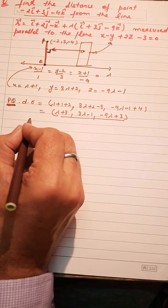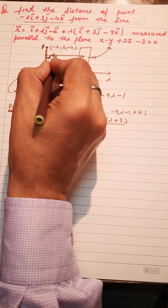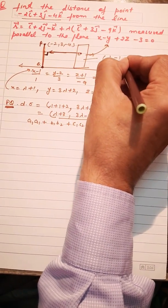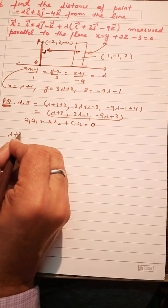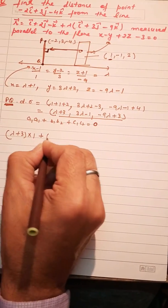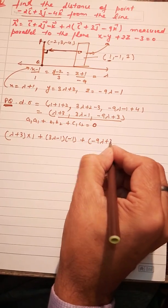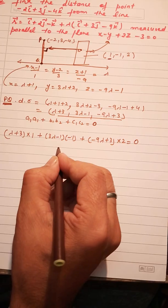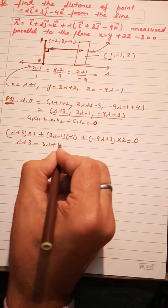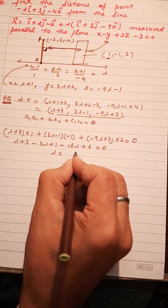PQ is perpendicular to the normal of the plane. Using the condition a1·a2 + b1·b2 + c1·c2 = 0, and knowing the direction ratios of the plane's normal are (1, -1, 2), we get: (λ+3)·1 + (3λ-1)·(-1) + (-9λ+3)·2 = 0. Solving: λ+3 - 3λ+1 - 18λ+6 = 0, giving λ = 1/2.